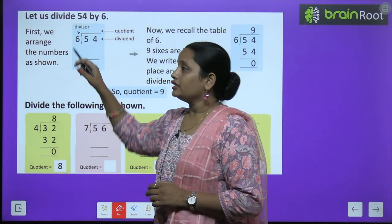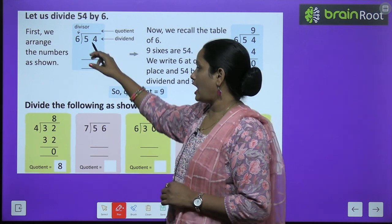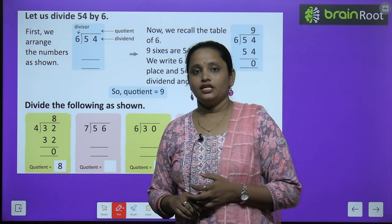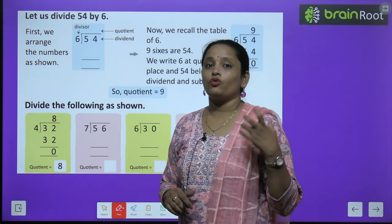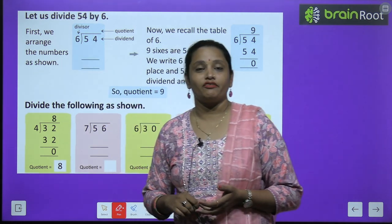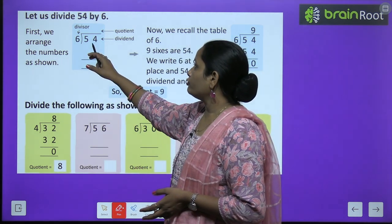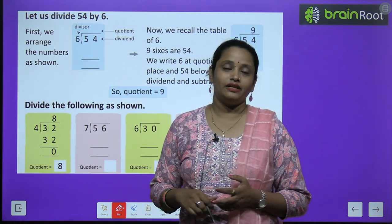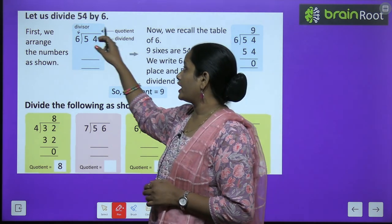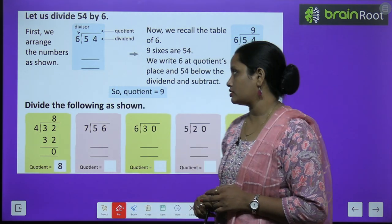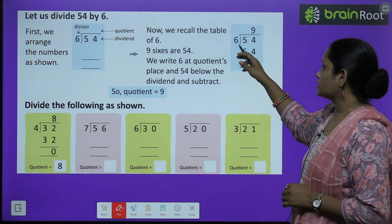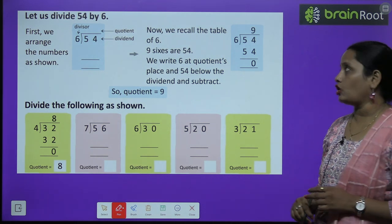So 6 is what we have written here with an arrow. Six is the divisor. The number by which a particular thing is divided — that six — we call the divisor. 54 is our dividend. And whatever answer comes after dividing them, that will be called our quotient. So let's arrange the numbers here. Now when we divided 54 by 6, what did we get?